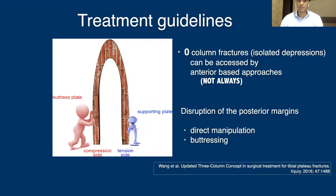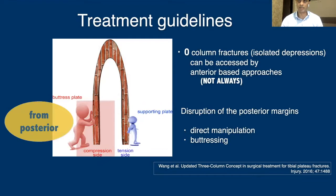How do we treat these fractures? If you have an isolated depression on the posterolateral aspect, which is more common than the posteromedial aspect, these fractures can be accessed from an anterior-based approach indirectly. It may not always be possible, but this is one strategy that can be employed most of the time. However, if you have a fracture that has resulted in disruption of the posterior cortical margins, then you need direct manipulation to achieve your reduction and also buttress that fragment from the posterior side in order to stabilize it.